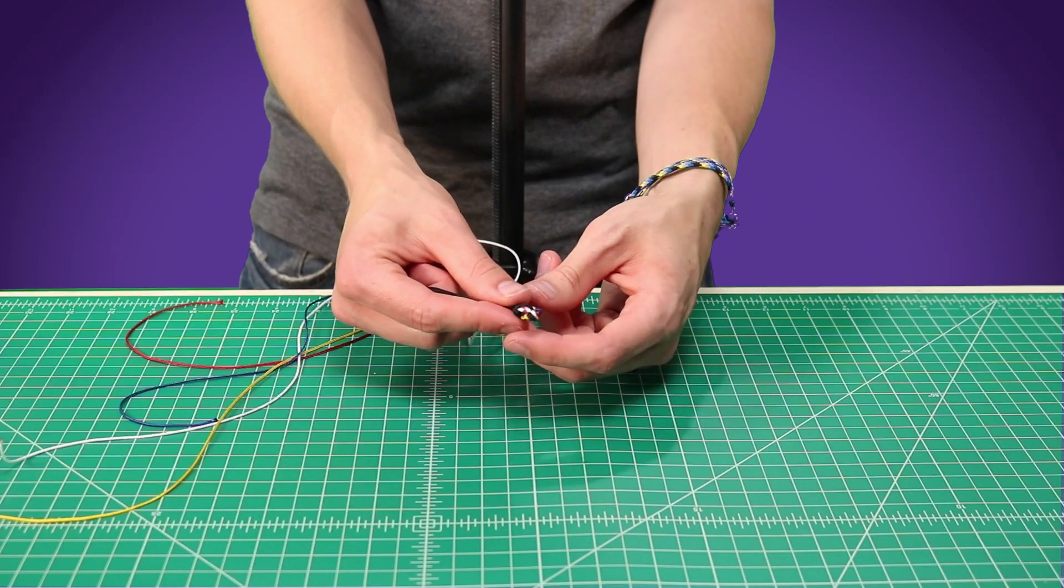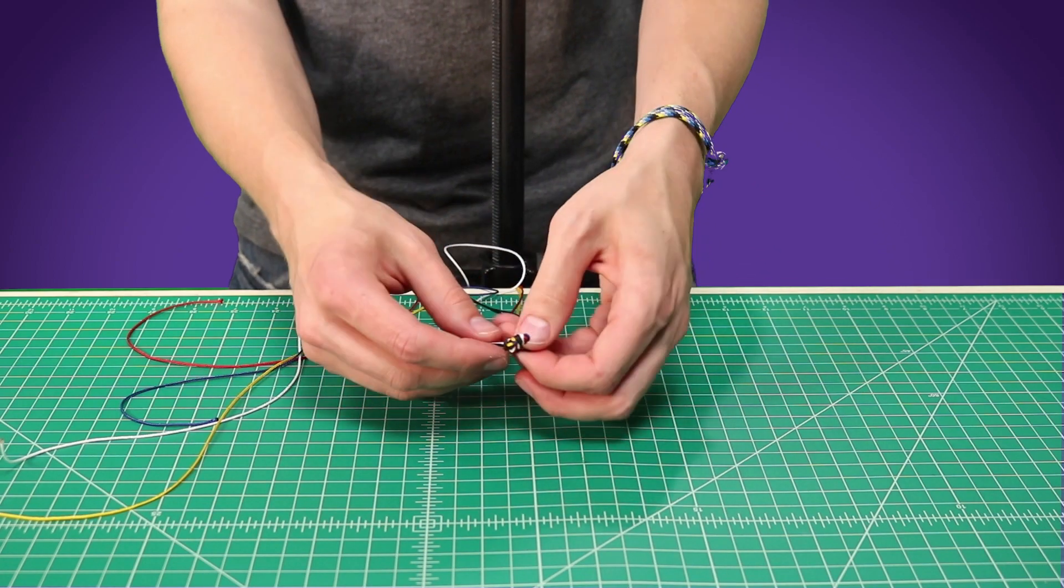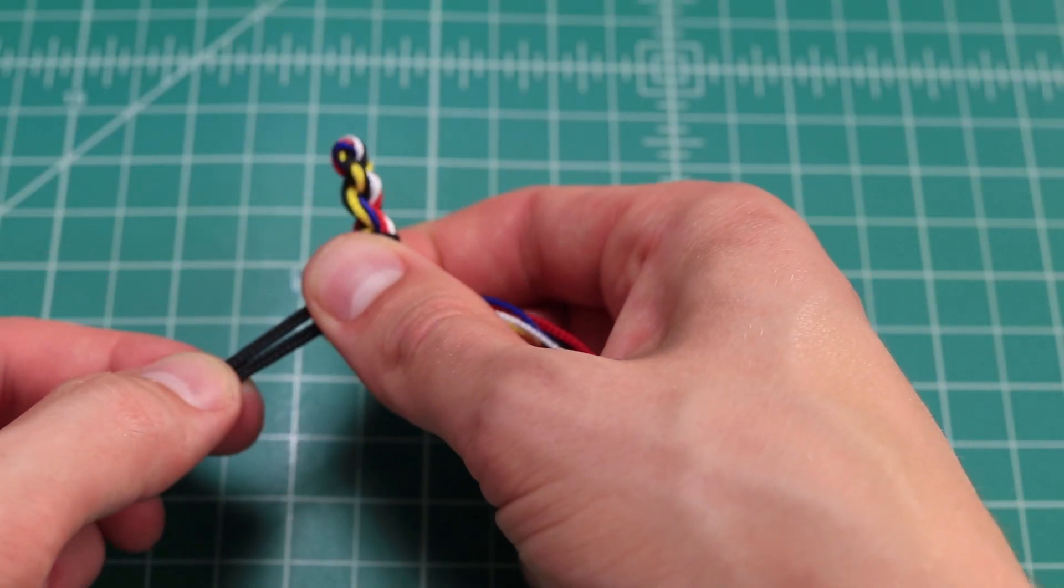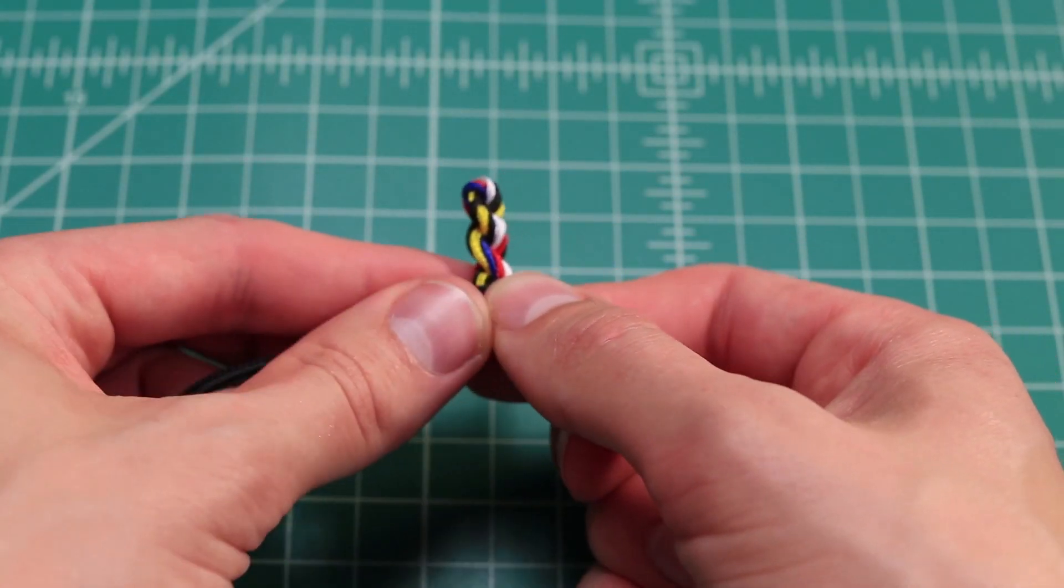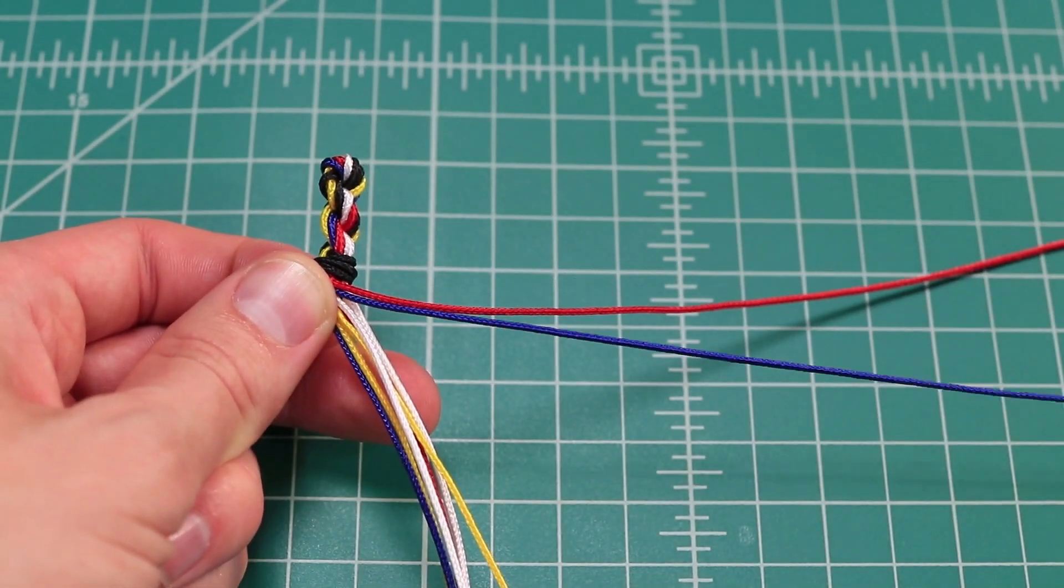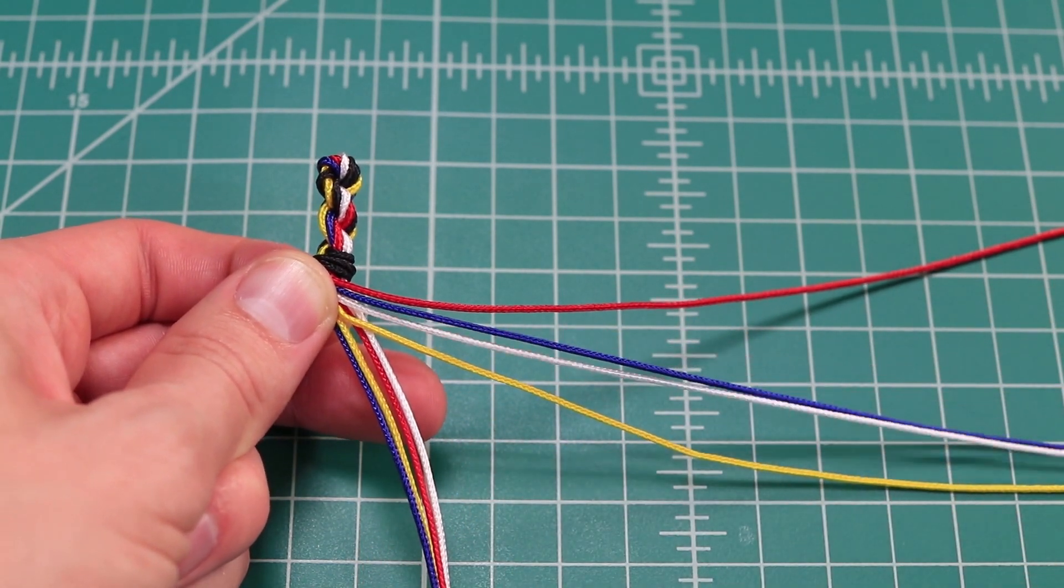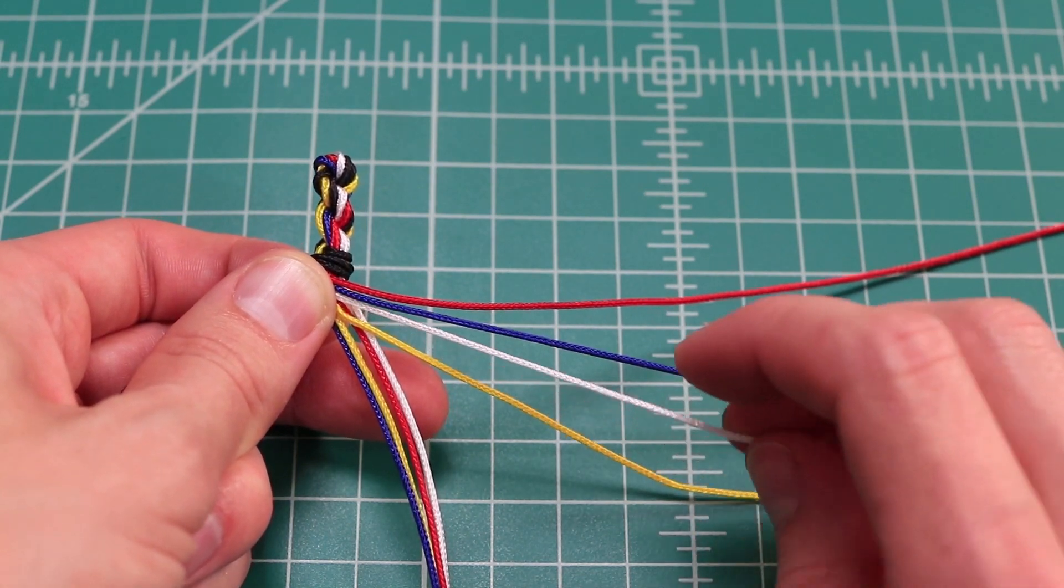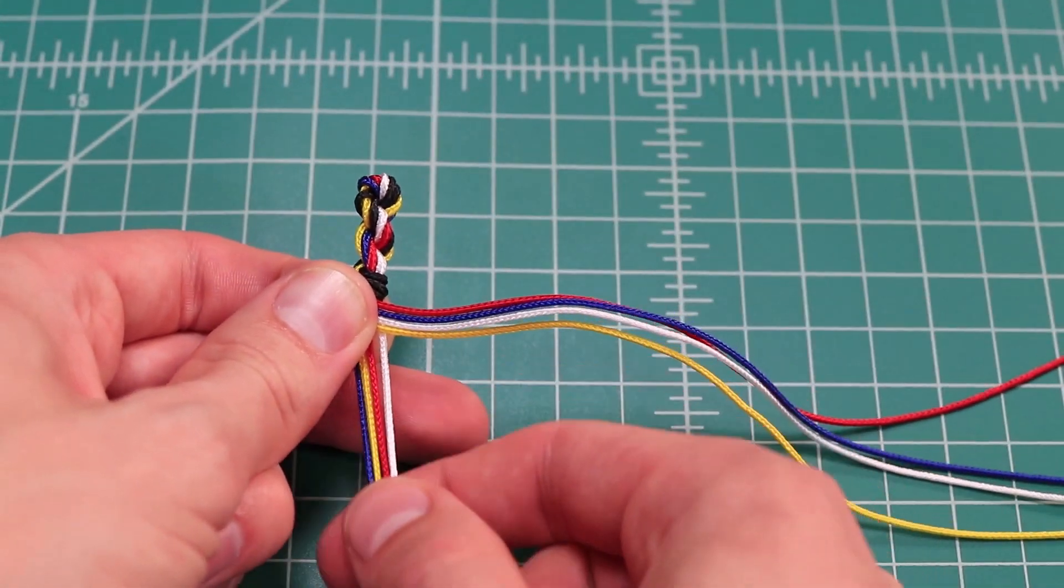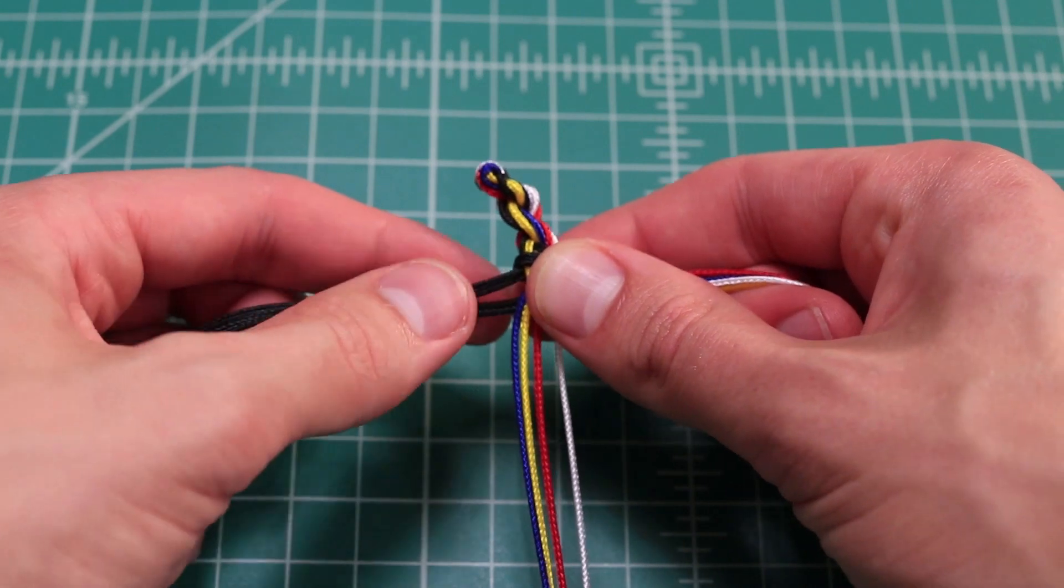Now we're going to begin the actual part of our weave. You want to line all of your black cords on the one side, and lay them out flat. And then on the other side, you're going to take one each of your other colors. Lay them out flat as well. And these other four of the same colors are just going to stay in the middle, and we're going to be wrapping around those.